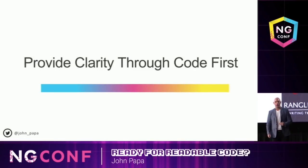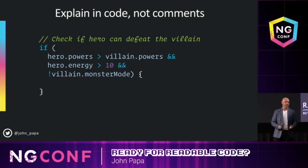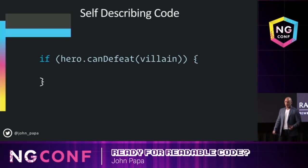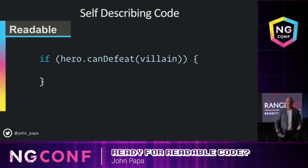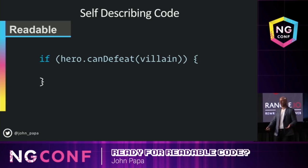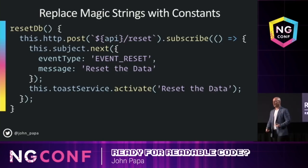Providing clarity through code first. Sometimes we look at comments as the way to go there, but I think code is a better way. Because how often do you honestly update the comments when you change code? I know I don't. Instead, self-describing code — write a function: 'hero can defeat villain.' Little things like this are very easy to do through refactoring and abstracting. Always opt for self-describing code over comments to describe a what.